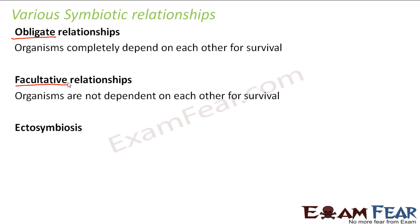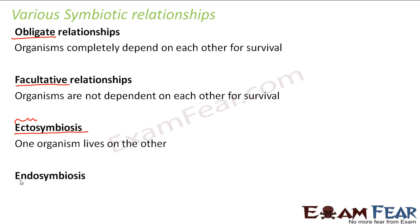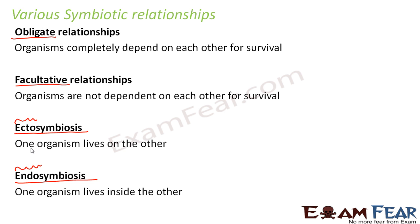The third one is ectosymbiosis. The word ecto means outside, so one organism lives on the other — that is ectosymbiosis. The fourth one is endosymbiosis. Endo means inside, so endosymbiosis is when one organism lives inside the other. In ectosymbiosis the organism lives on the other but does not live inside that other organism. These are the four different symbiotic relationships we will now discuss.